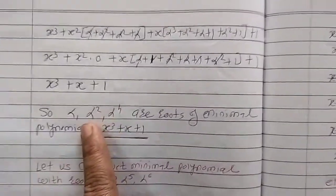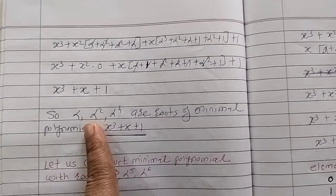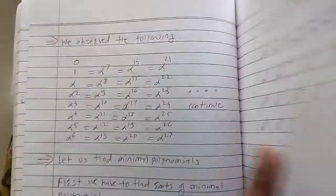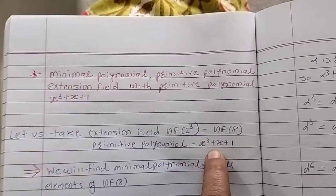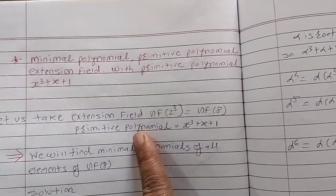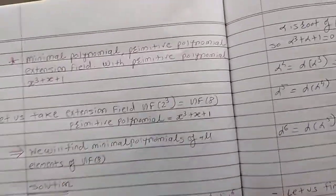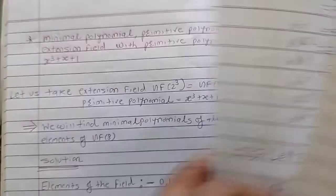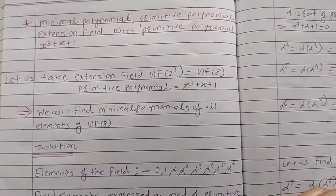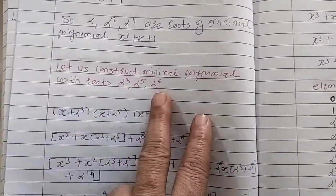You can see that the primitive polynomial is also a minimal polynomial, but not all minimal polynomials are primitive polynomials. The primitive polynomial x³+x+1 is a minimal polynomial, but primitive polynomials carry extra features that not all minimal polynomials have. Those features were discussed in the previous video.